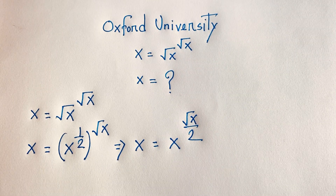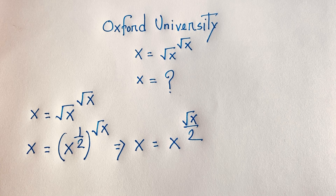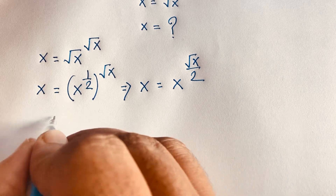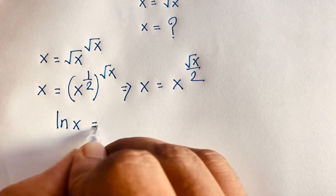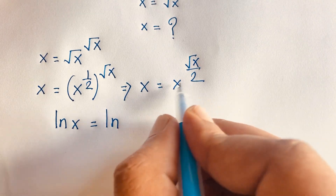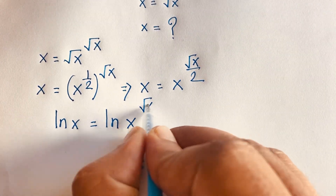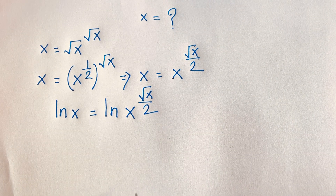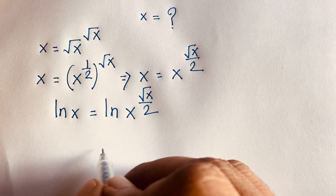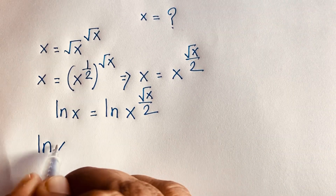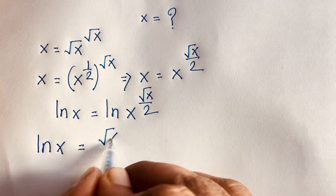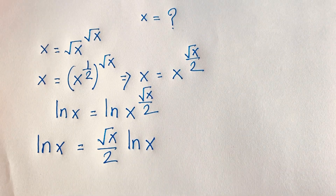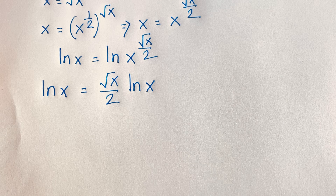Now I apply the natural log to both sides. So ln x equals ln of x to the power square root x over two. According to the natural log rules, the exponent can be moved to the front, giving us ln x equals square root x over two times ln x.